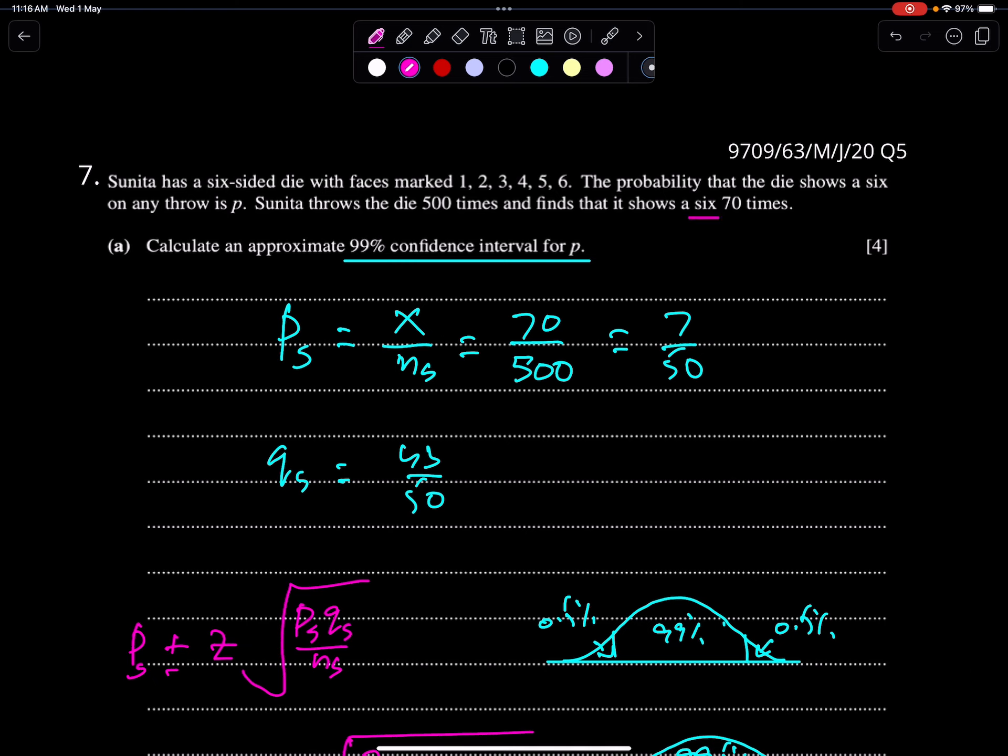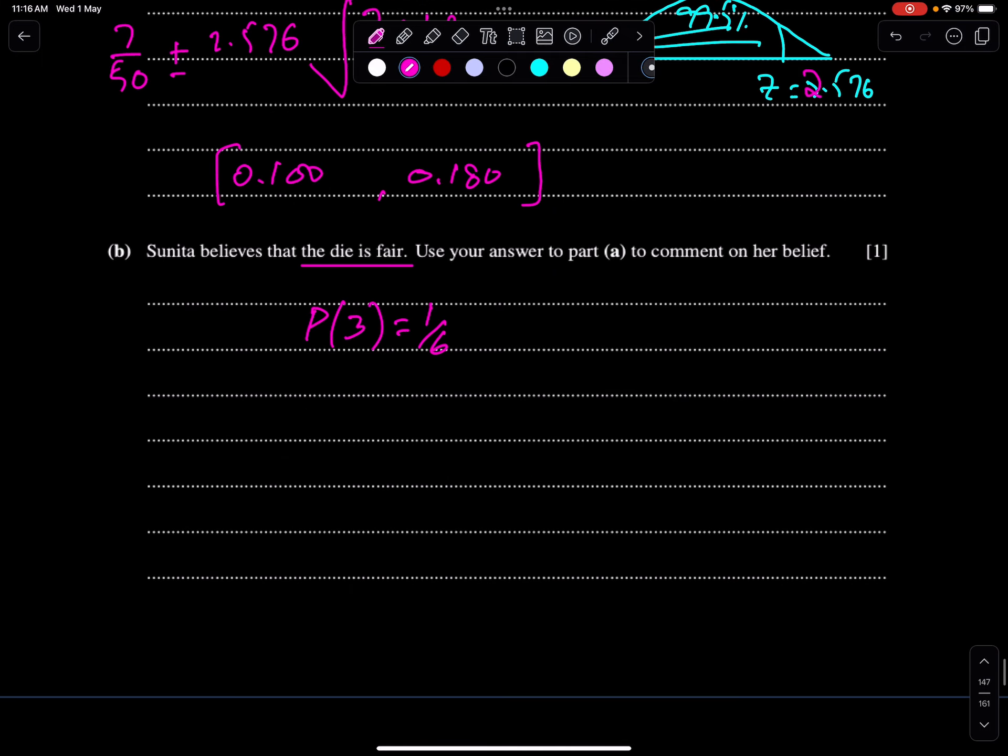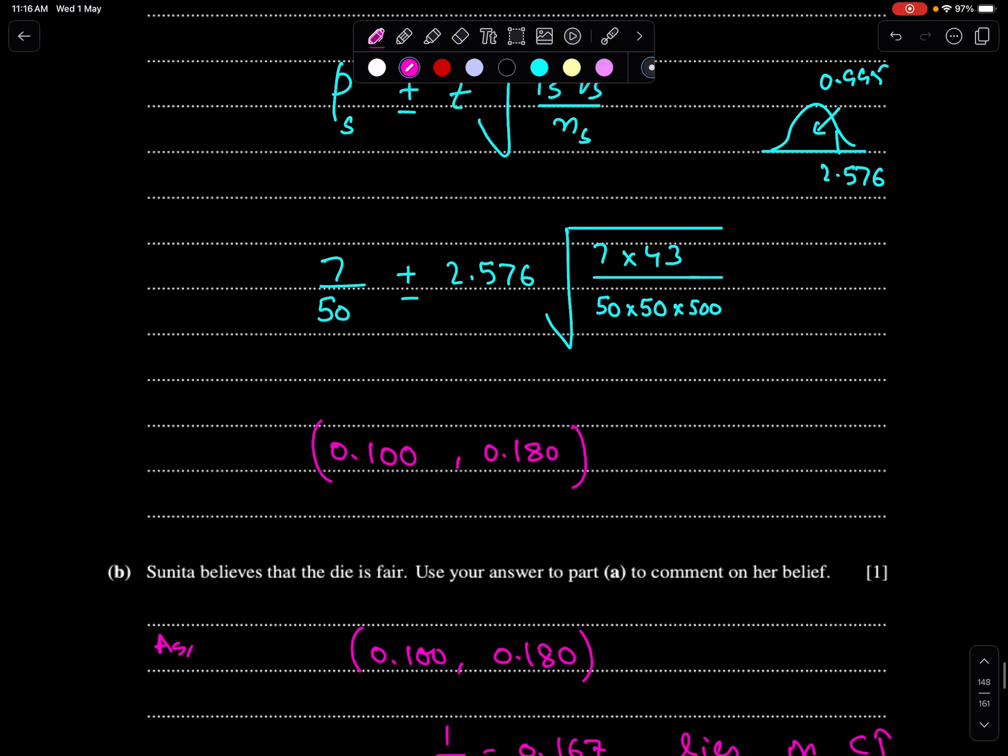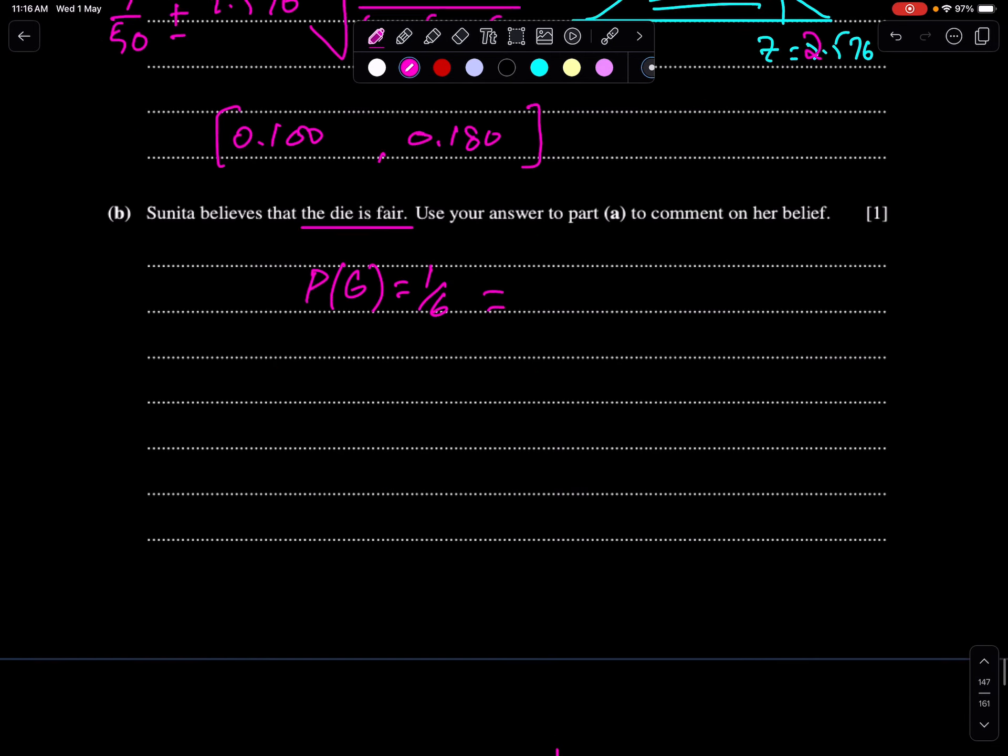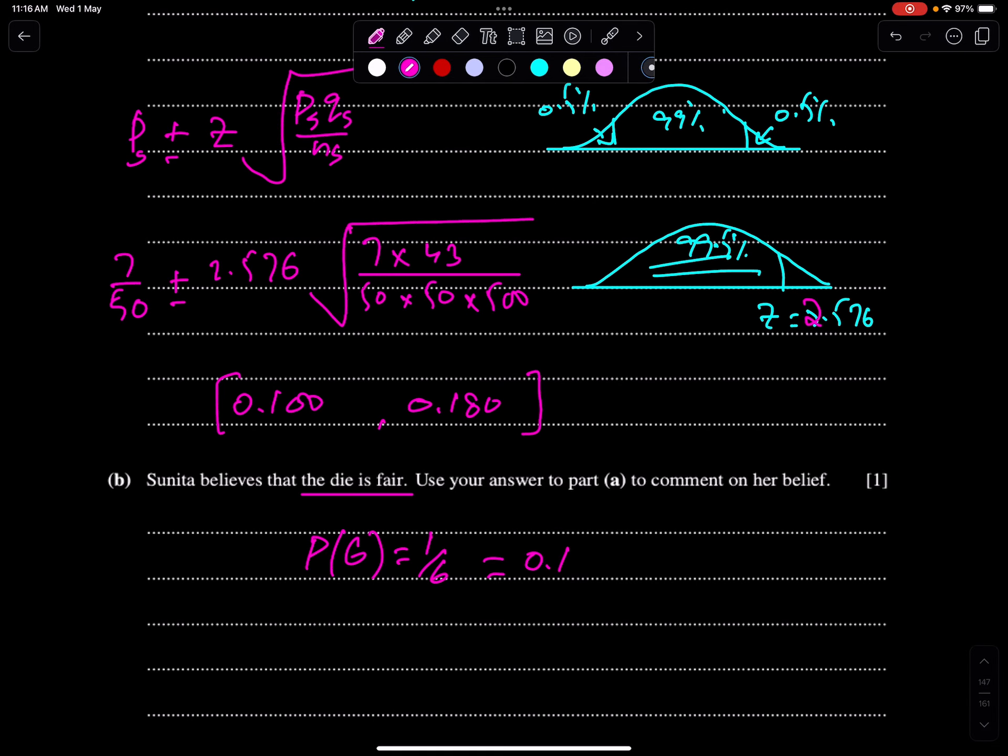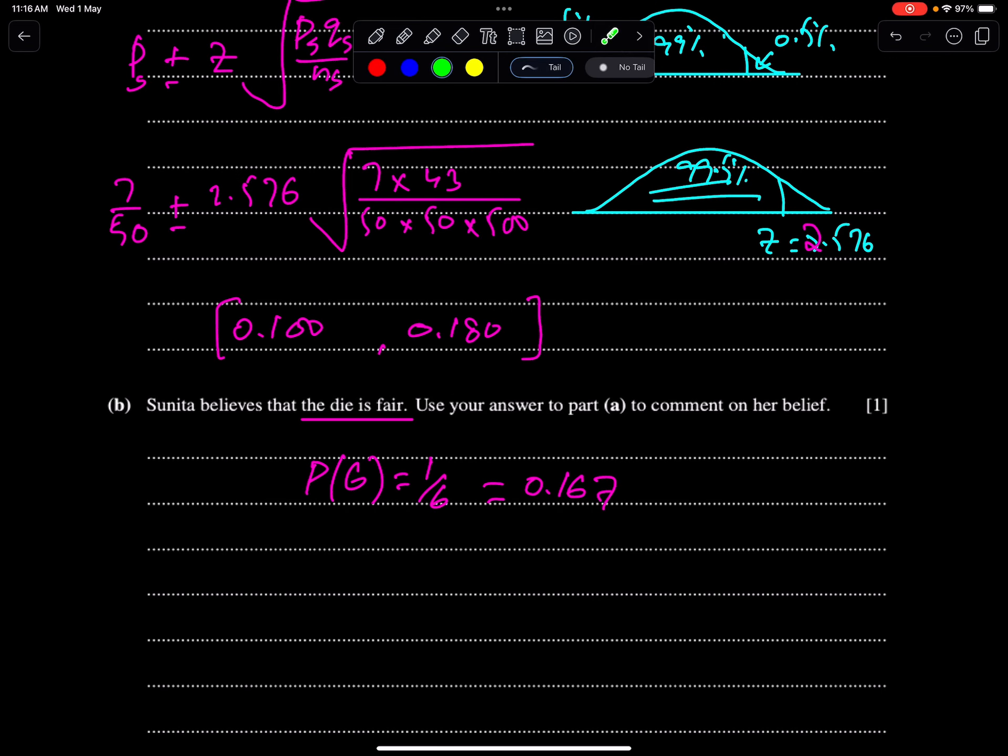Sunita checked 6, number of 6. So probability of 6 should be 1 upon 6 on a fair die. So you have to check 1 upon 6. In decimal form, 1 upon 6 is 0.167.